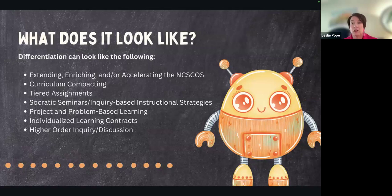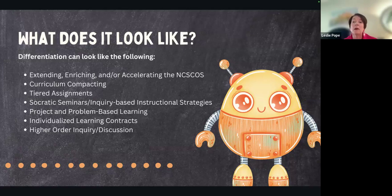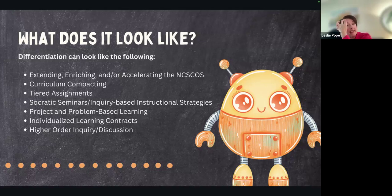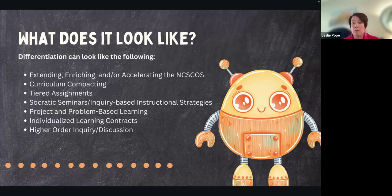Differentiation is very different from rigor, and a lot of people get those confused. Differentiation can look like extending, enriching, or accelerating the standard course of study. For example, with fifth grade volume, I have students working on projects or activities above what they'll learn in the classroom. You can also do compacting, tiered assignments, Socratic seminars, project and problem-based learning, individual contracts, or higher order inquiry and discussion.